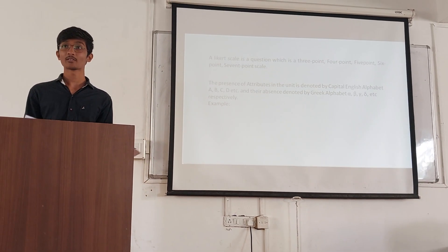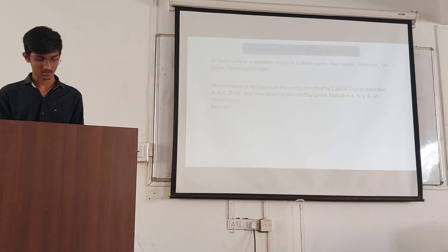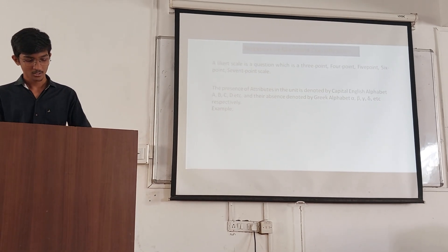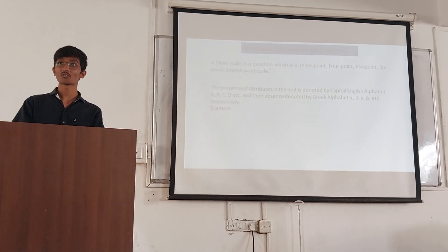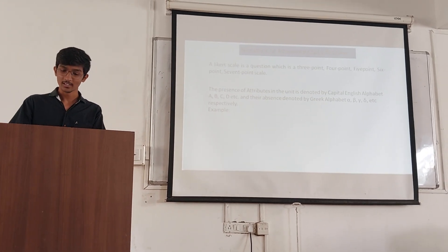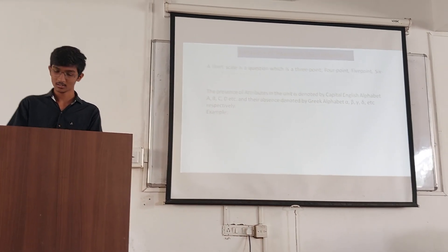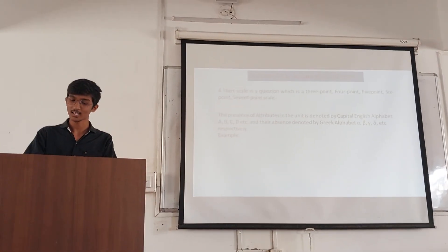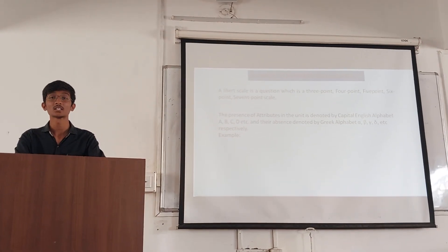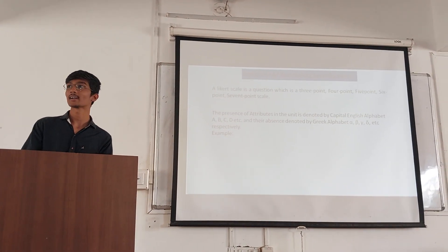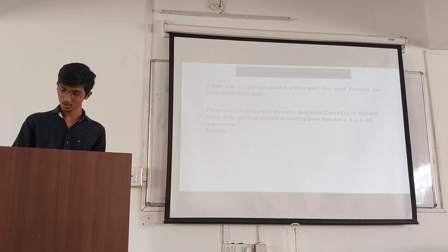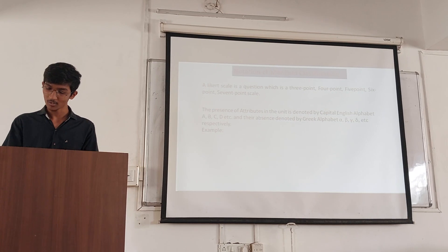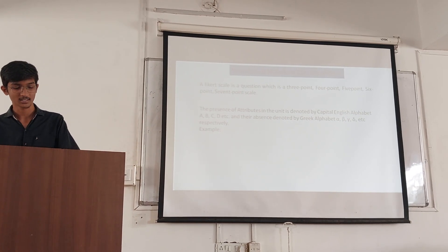Notation of manifold classification: The presence of attributes in a unit is denoted by capital English alphabets A, B, C, etc., and the absence is denoted by Greek letters alpha, beta, gamma, etc.